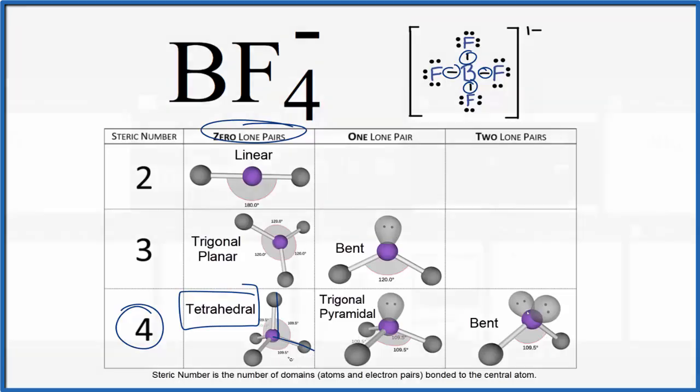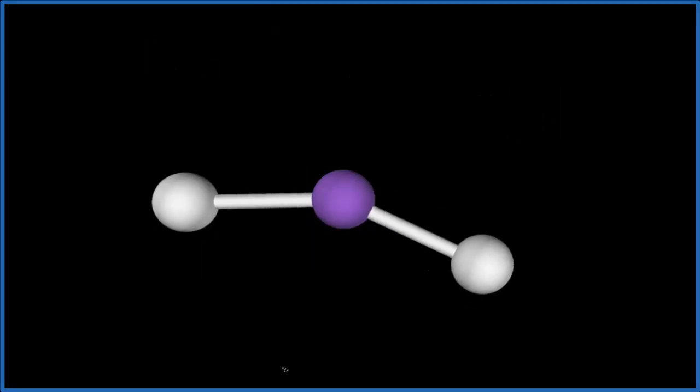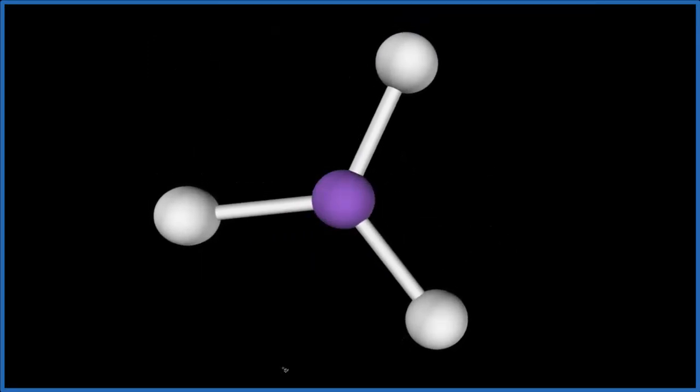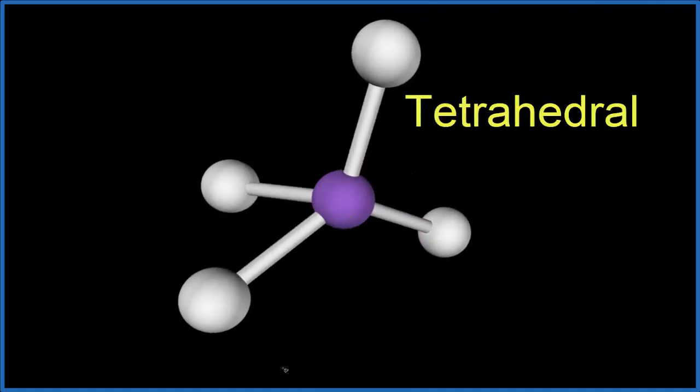Let's look at this in three dimensions. So the central atom, that's our boron. Let's add four fluorine atoms. One, two, three. You see how they're spreading out? Four. And when they spread out, we end up with this tetrahedral molecular geometry.